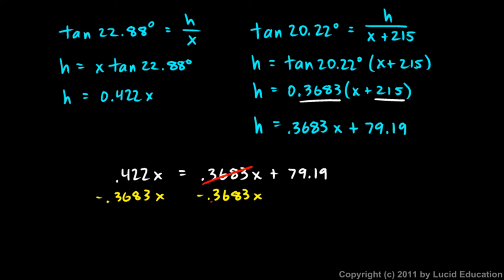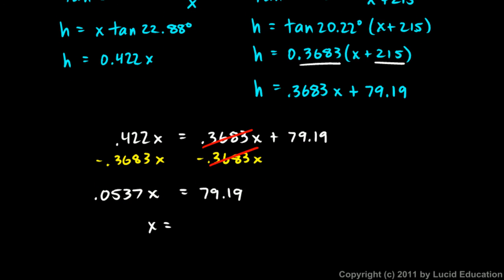Those cancel out, and on the left 0.422 minus 0.3683 is 0.0537x. Then on the right I just have 79.19, so x is 79.19 divided by 0.0537, and that comes out to 1479 meters.